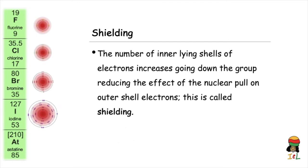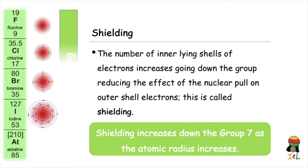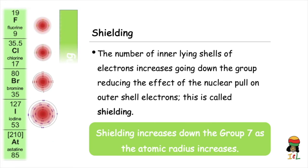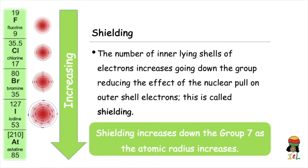Consequently, shielding increases going down Group 7 as the atomic radius increases. Note that shielding makes it difficult for the larger atoms to strongly pull the outer shell electrons towards the nucleus.